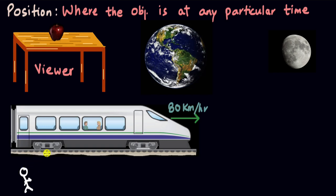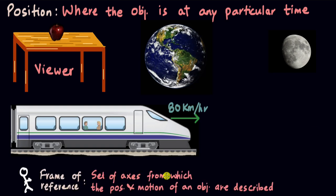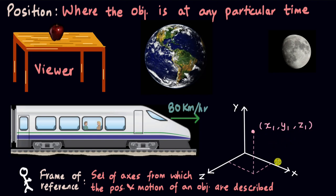Any measurement of position, distance, or speed must be made with respect to a reference frame. The fruit and the table are moving with some speed with respect to a reference frame on the moon, but they are in a state of rest with respect to a reference frame in the room on earth. A frame of reference is a set of axes from which the position and motion of an object are described. We can set mutually perpendicular axes and name them x, y, and z axes. The coordinates x1, y1, z1 of a particle then specify its position with respect to this frame.